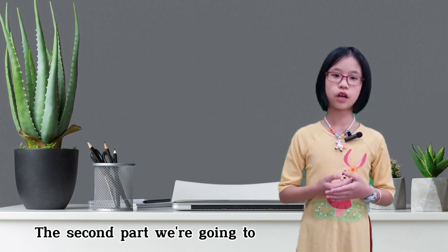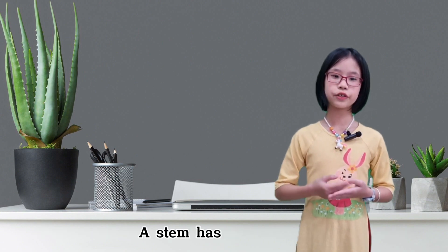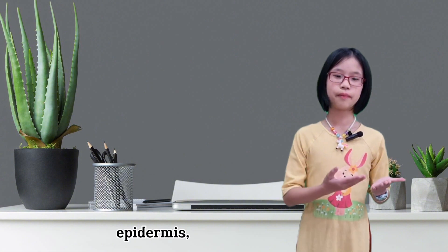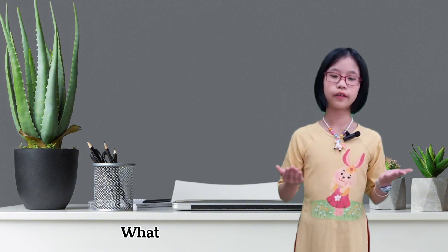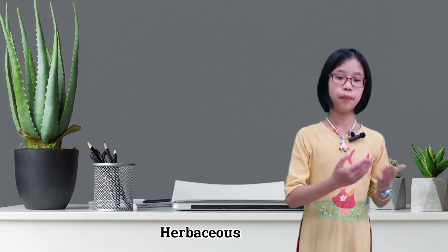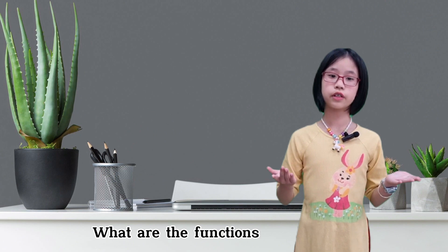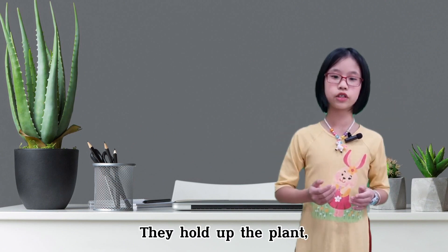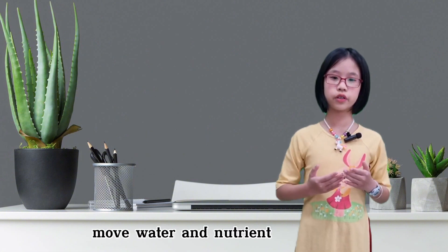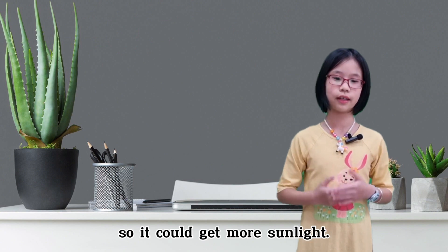The second part we're going to talk about are stems. A stem has three parts: epidermis, xylem, and phloem. The types of stems are herbaceous stems and woody stems. The functions of stems are that they hold up the plant, move water and nutrients through it, and hold the plant upright so it can get more sunlight.